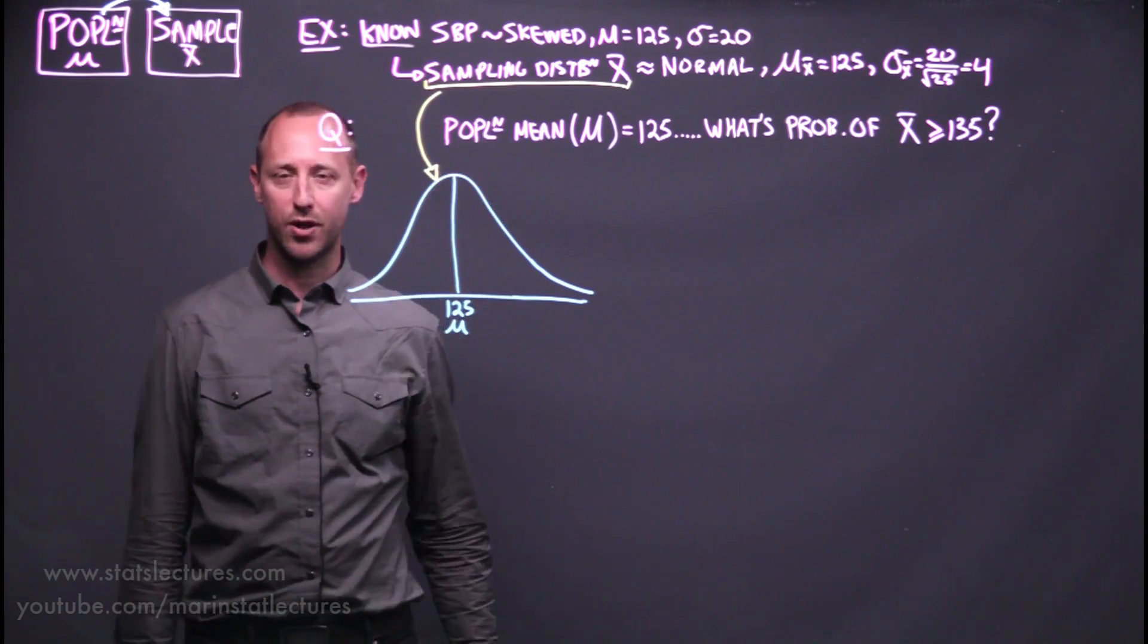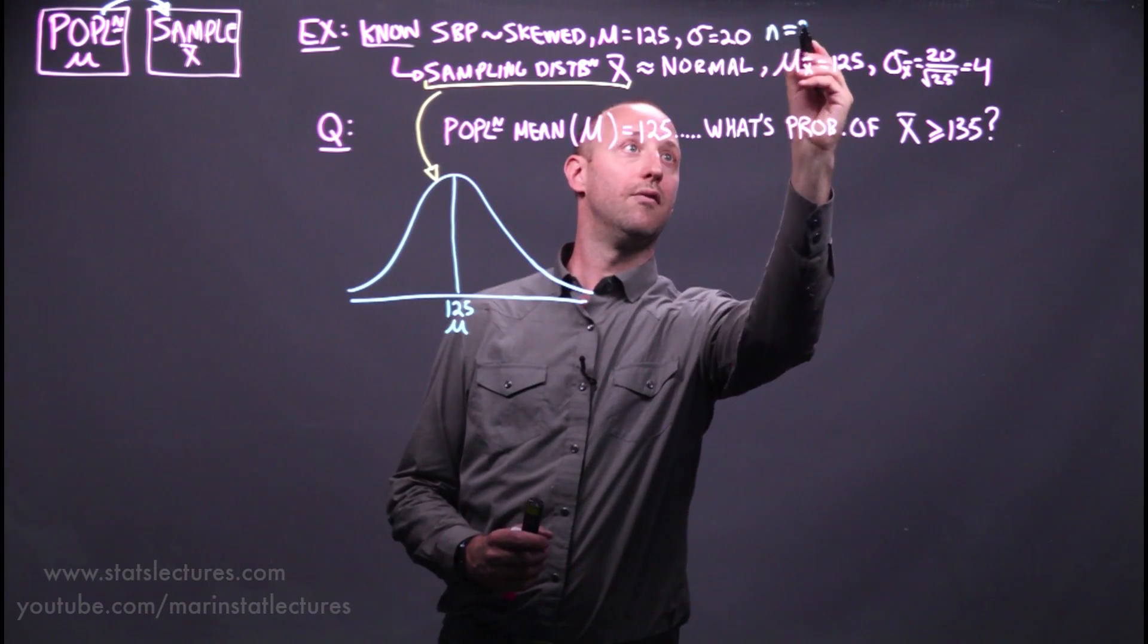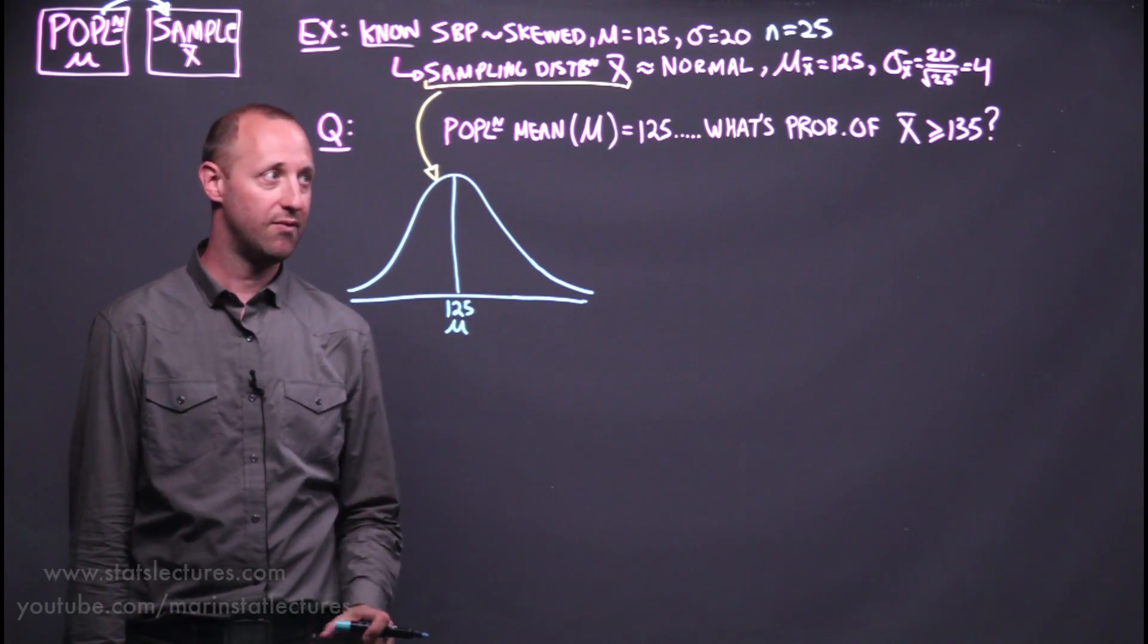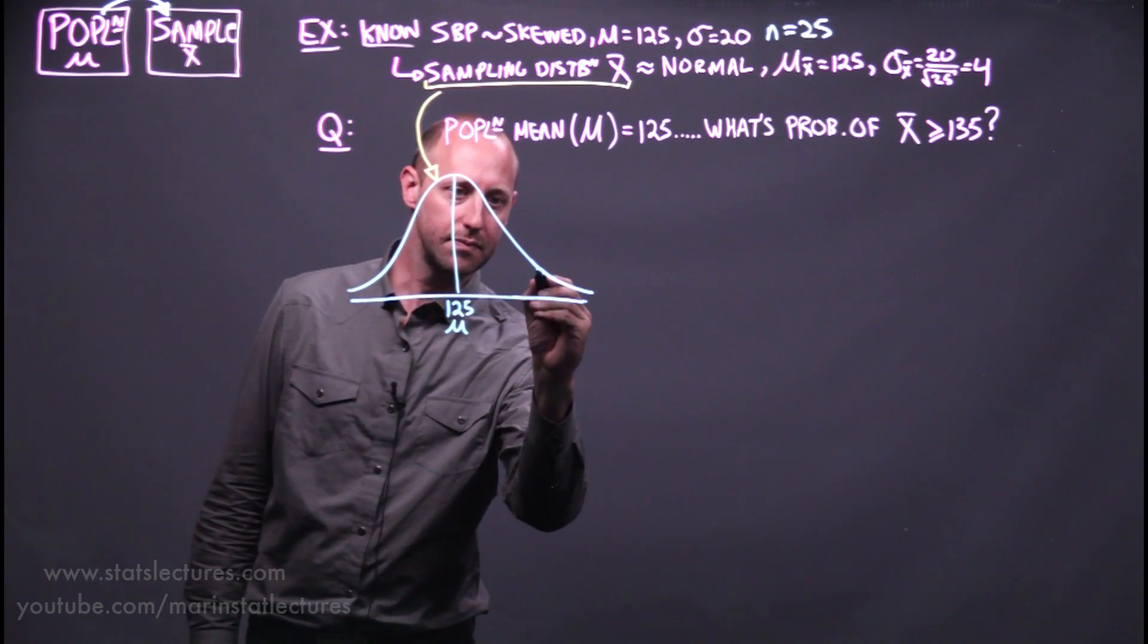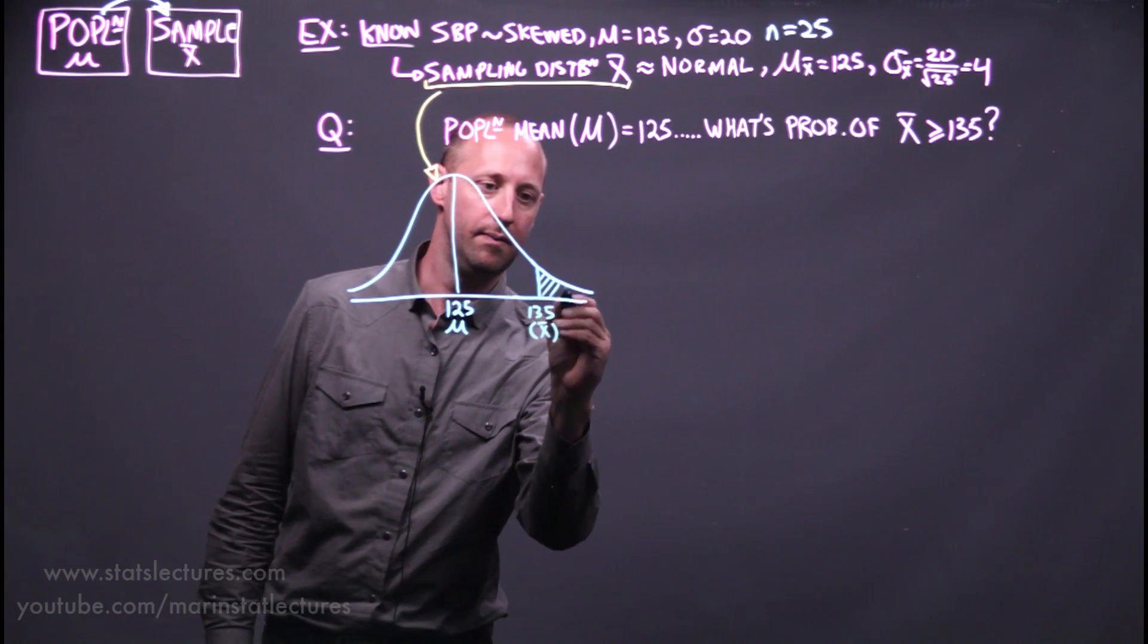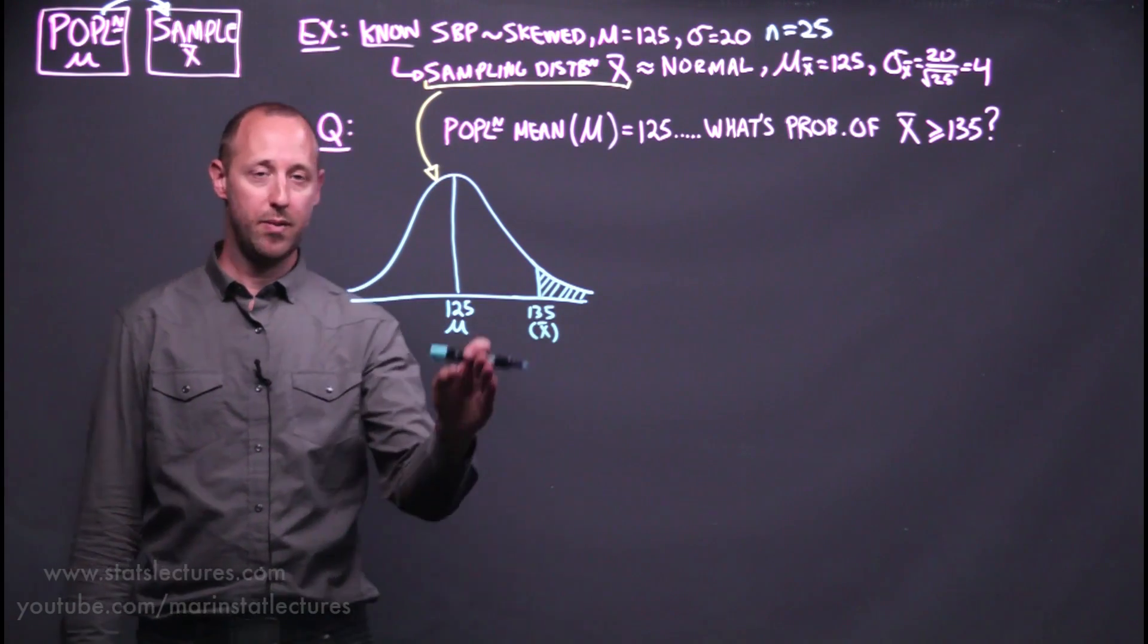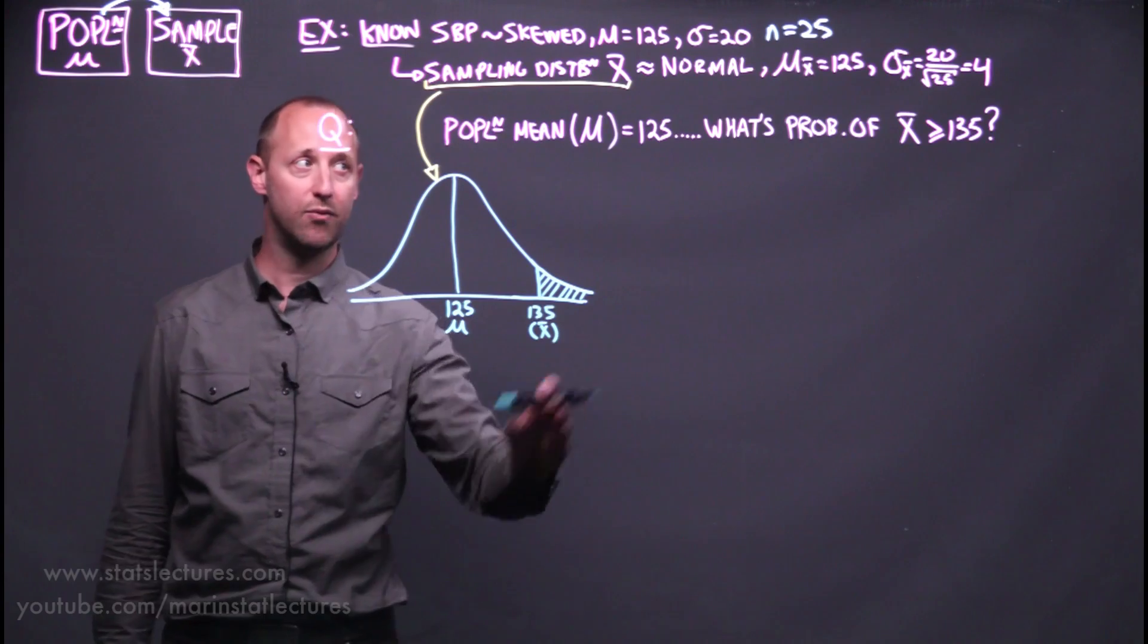Let's work out a probability here. When we take a sample of 25 observations, what's the probability of getting a sample mean greater or equal to 135? If we know the mean is 125, what's the probability in a sample of 25 observations we get a sample mean of 135 or more.